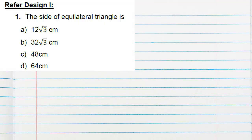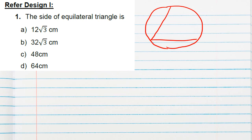Question number one: refer to Design 1 — find the side of the equilateral triangle. Design 1 has equilateral triangle ABC inscribed in a circle, where OB = 32 cm. We have to find side AB, BC, or AC — any one side. To find this, we will join OC and draw a perpendicular from A to BC, meeting BC at D.